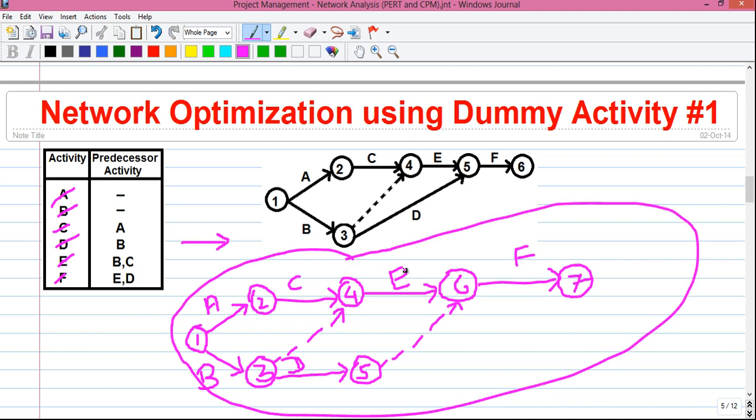Now we will do some optimization to it. Instead of drawing activity D this way at event 5 and then connecting it with dummy activity to event 6. If you draw the activity D straight from this event to directly this event, you can save one dummy activity. Also, you will save one event number. Instead of finishing the network at event 7, you can finish the network at event 6. So by that way, you can optimize your network.